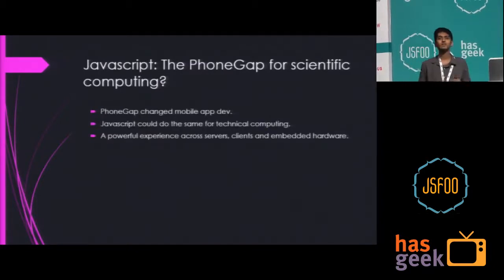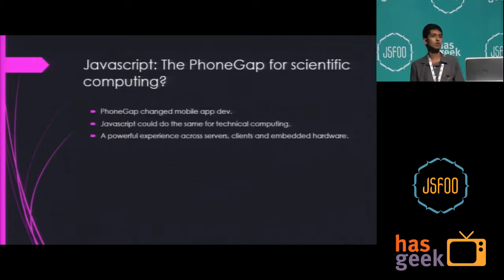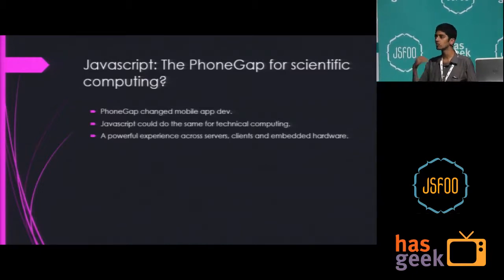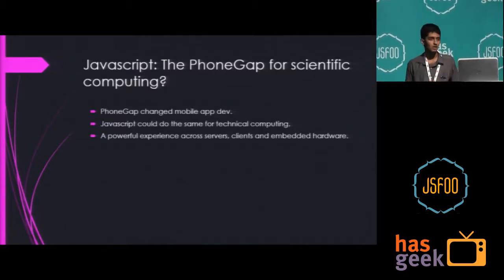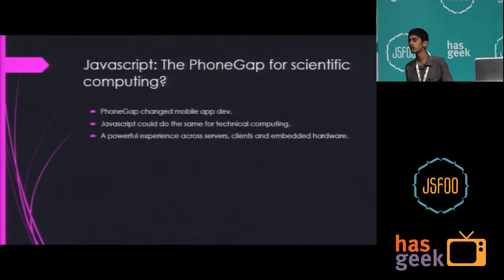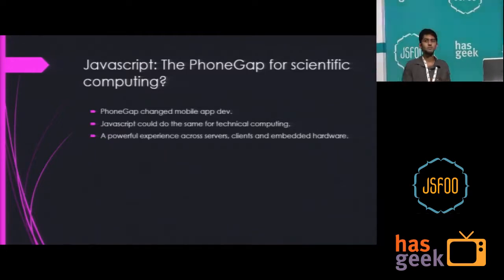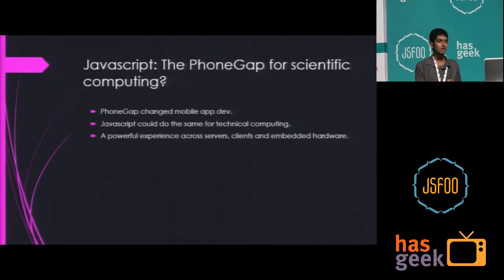I think that JavaScript can be the PhoneGap for scientific computing. We can all agree that PhoneGap totally revolutionized the way web developers interact with mobile app development. You're a web dev — you know HTML, CSS, JavaScript is your primary weapon. Suddenly you've been given a tool to write mobile applications not just for one platform but for multiple platforms. In the same way, JavaScript can do the same thing for technical computing, where web devs can easily get into machine learning, data science, computational finance, higher-order mathematical computing, without having to jump into another language altogether. It's going to be a powerful experience across clients, servers, and other devices — the same set of libraries, the same ecosystem, available throughout.